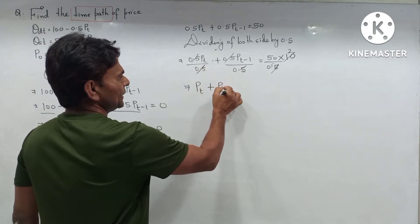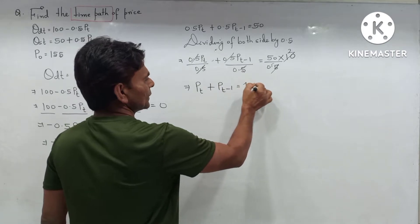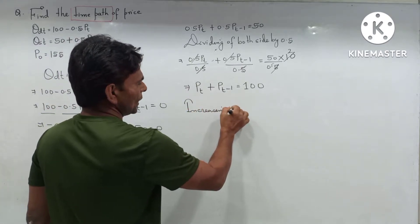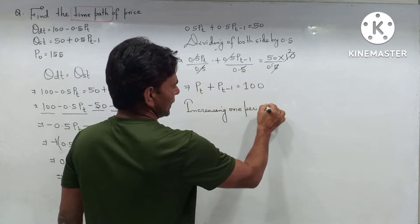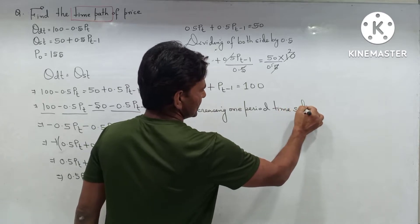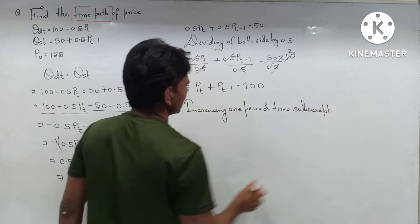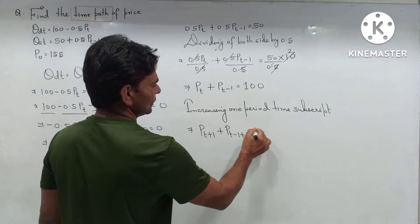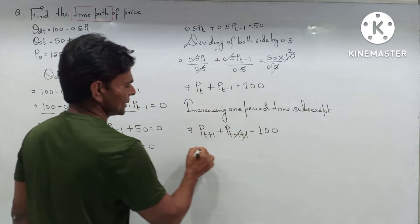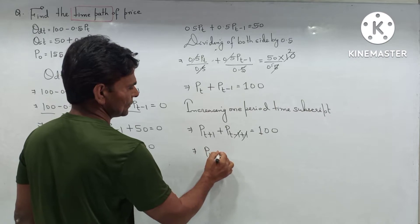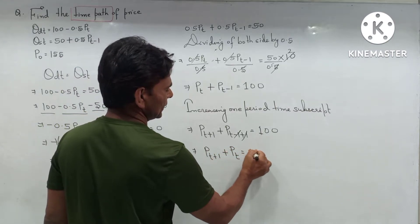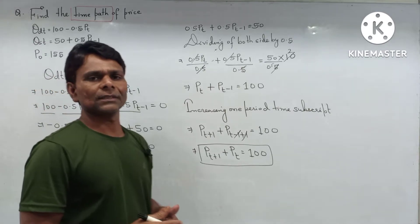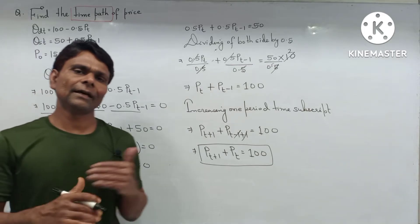We are left with p(t) + p(t-1) = 100. Increasing the time subscript by 1 period, it becomes p(t+1) + p(t) = 100. This is a first-order difference equation, and we need to obtain the general solution as well as the definite solution in order to find the time path of price.